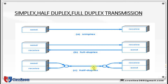Half duplex means data is transmitted one way at a time. The sender sends data and the receiver accepts that data. Then this receiver may act as the sender, sending data back, while the original sender acts as the receiver. It requires only one wire at a time. Data transmitted one way at a time is known as half duplex.